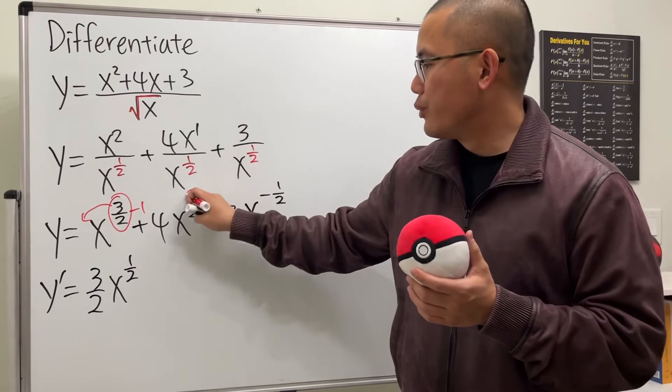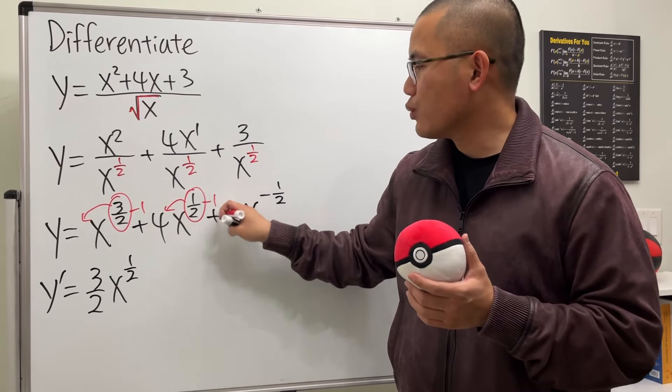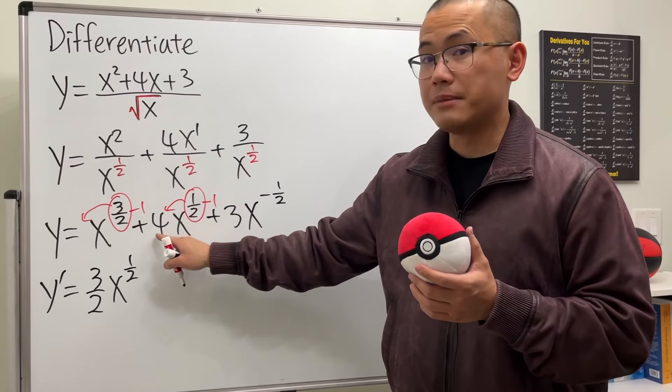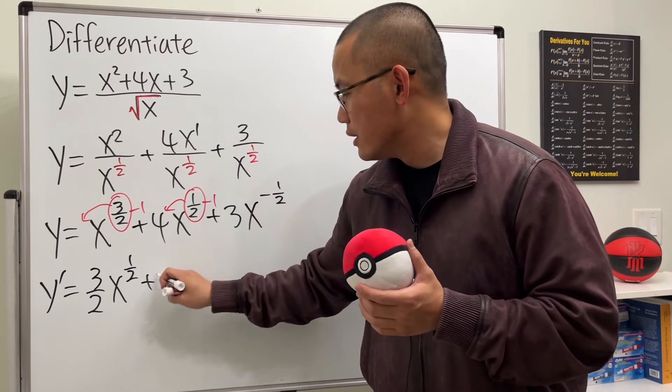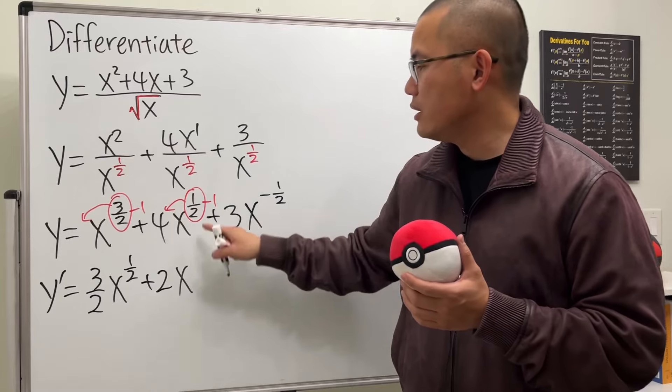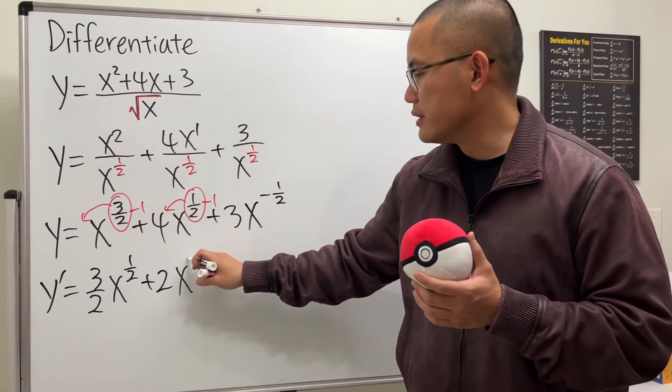Next, bring this to the front and then minus 1. 1 half times 4 is 2. And then we have x to the 1 half minus 1, which is negative 1 half.